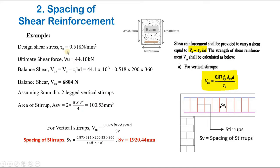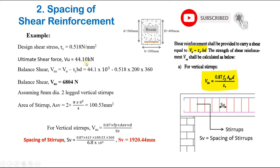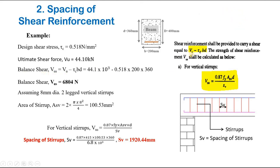Taking an example: the design shear strength τc is given as 0.518 N/mm², the ultimate shear force VU is 44.10 kN. The balance shear VUS is calculated as VU minus τc·b·d, which gives a balance shear of 6804 N.